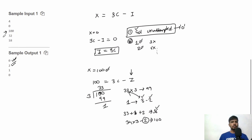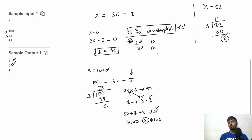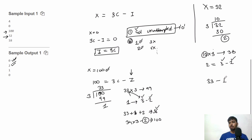For the third test case X = 32. Dividing 32 by 3 gives 10 remainder 2. So we get 30 marks from 10 correct problems. The remaining 2 can be written as 3 - 1, meaning one correct and one incorrect. So 11 correct problems give 33 marks minus one incorrect gives 32. The minimum number of incorrect problems is 1, so we output 1.